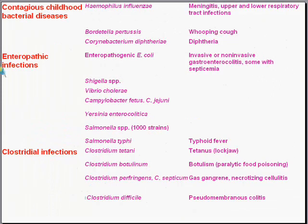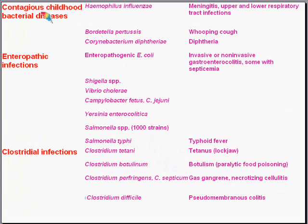The third group is the contagious childhood bacterial diseases. Haemophilus influenzae is probably the single biggest cause of meningitis and upper and lower respiratory tract infections in young children. Bordetella pertussis causes whooping cough, and Corynebacterium diphtheriae causes diphtheria, a very destructive upper respiratory bacterial disease.